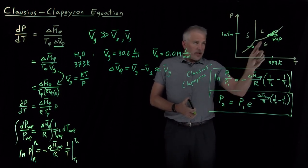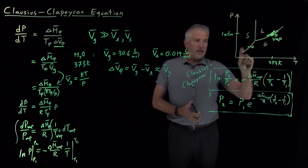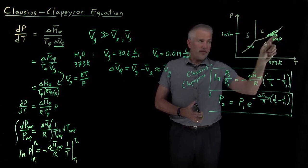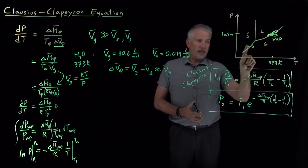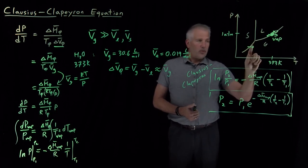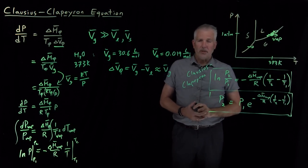So, as we said, what that allows us to do is calculate specific points along these phase coexistence curves as long as one of the phases involved is the gas, so liquid to gas or solid to gas. So, we'll work some examples using the Clausius-Clapeyron equation coming up next.